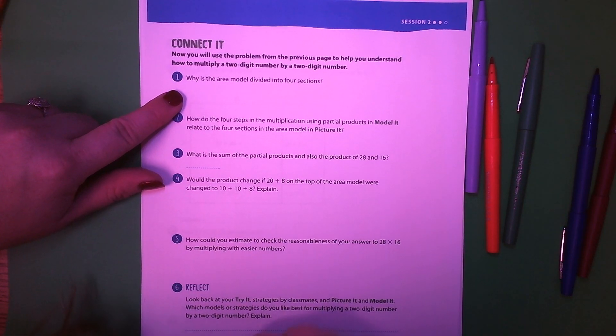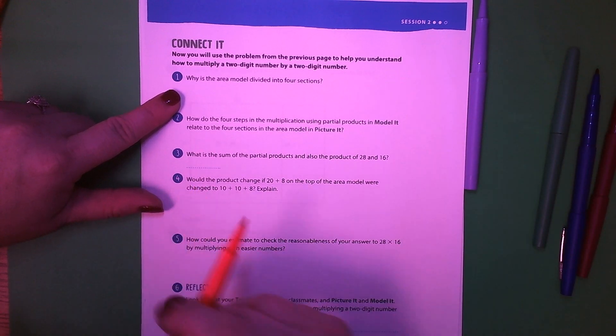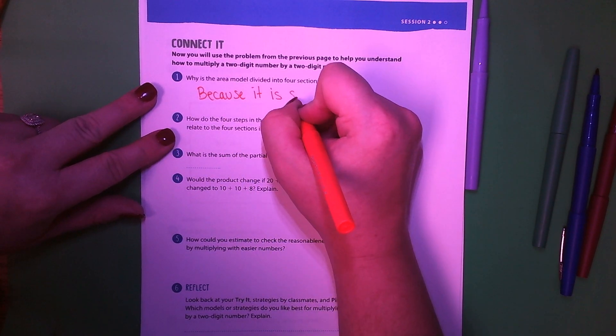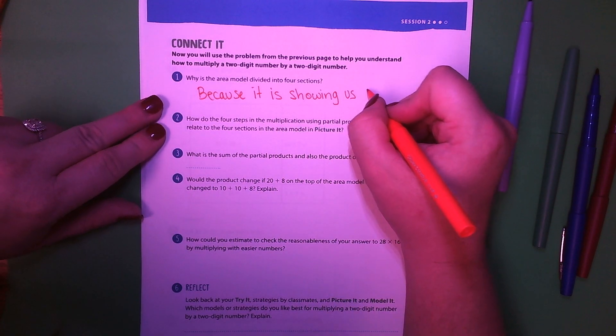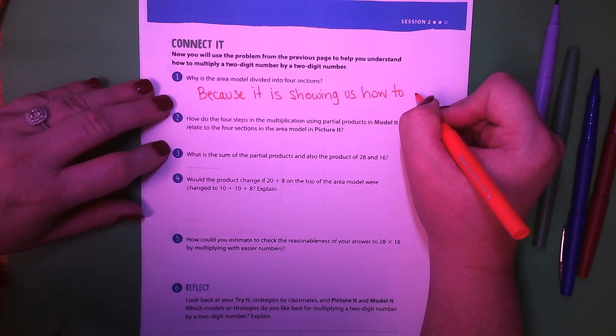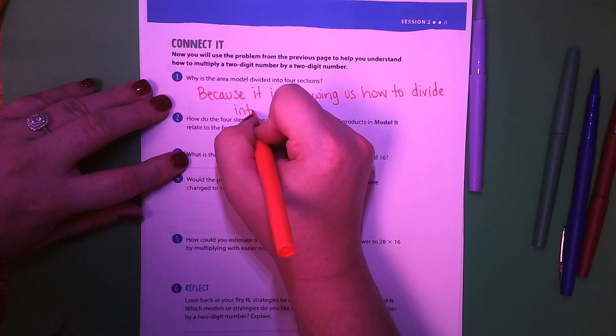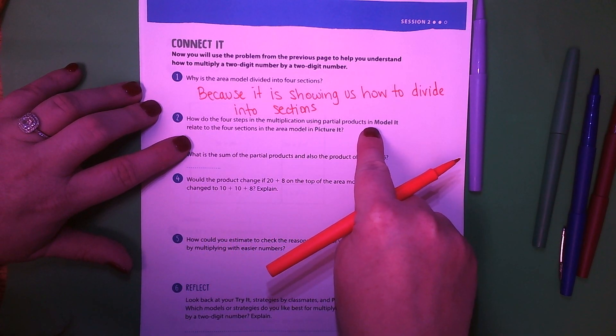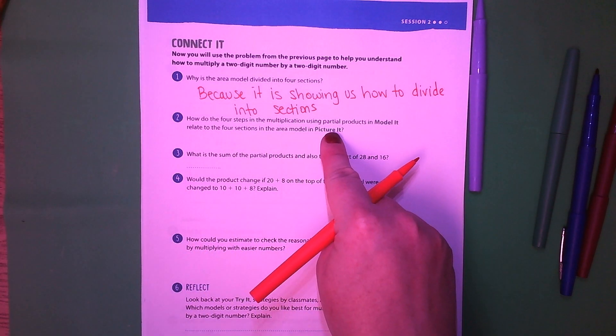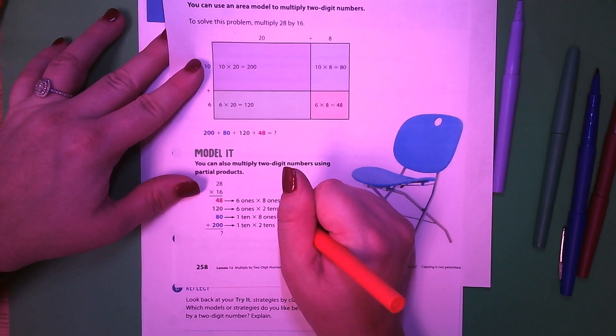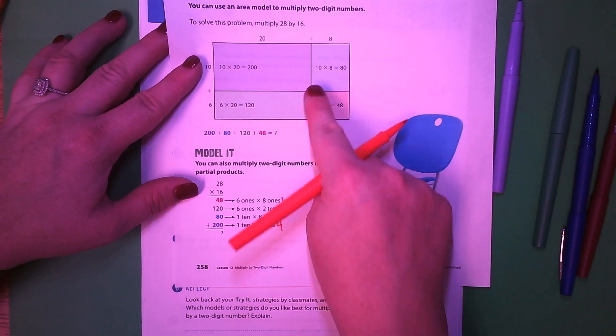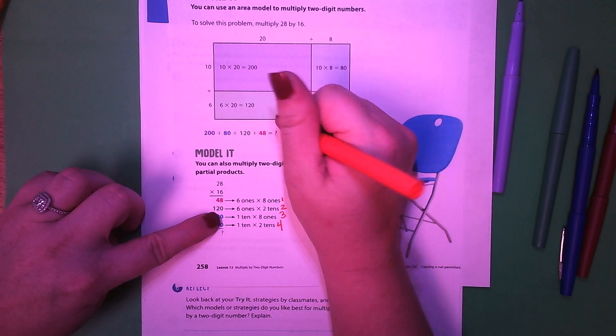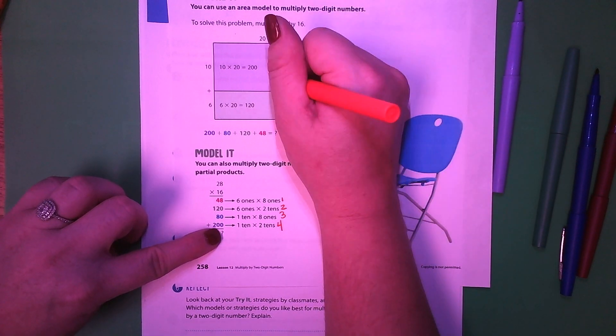And then here's the other model where we did with partial products, where we did 6 ones times 8 ones, 6 ones times 2 tens, etc. to get our answer there. So this is also a great sheet to keep handy to help you know how to solve these two-digit by two-digit problems. Why is the area model divided into four sections? Because it is showing how to divide into sections.